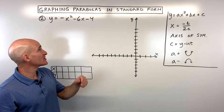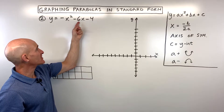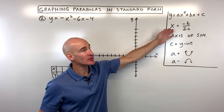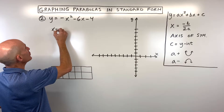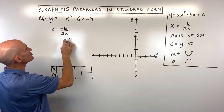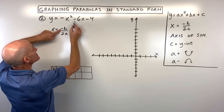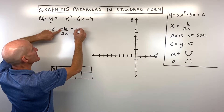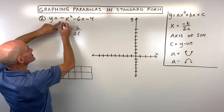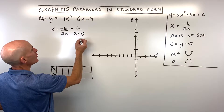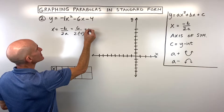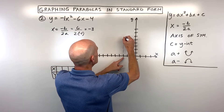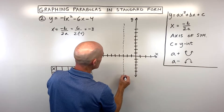For example 2, let's graph y equals negative x squared minus 6x minus 4. I always like to start by finding the axis of symmetry using x equals negative b over 2a. Negative b is the opposite of b — you can think of the coefficient as negative 1, so negative 1 times negative 6 gives positive 6, over 2 times negative 1. So 6 over negative 2 comes out to negative 3. At x equals negative 3, this is our axis of symmetry, and the graph is the same on both sides.